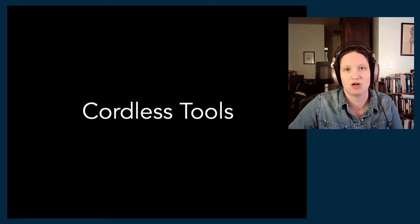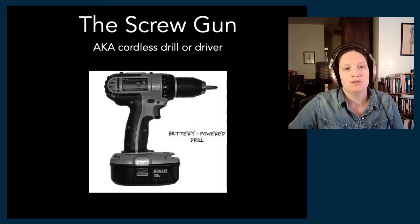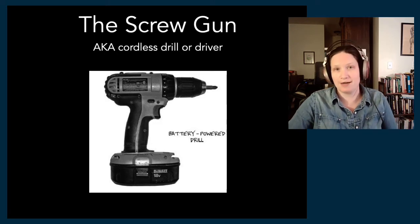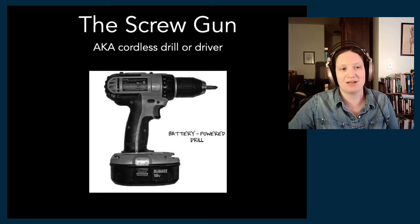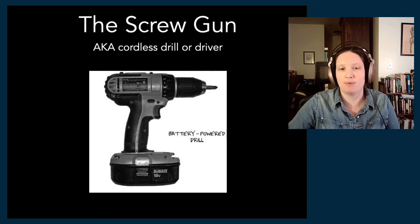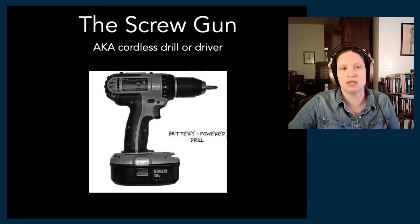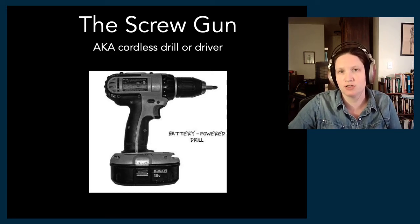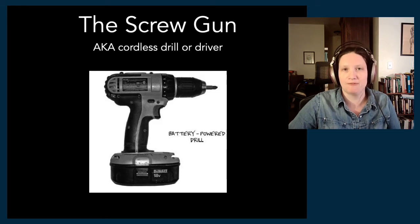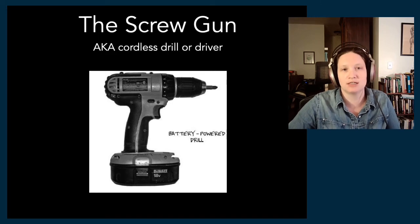First, let's talk about cordless tools — ones that don't have to plug into something because they're on a battery pack. The key one that we all see the most is a screw gun, which is a cordless drill or driver. There are a couple of different tools that fall under this screw gun category: a battery powered drill, impact drivers which are a bit more powerful, and basic screwdrivers. If you see something that looks like this, you can call it a screw gun.